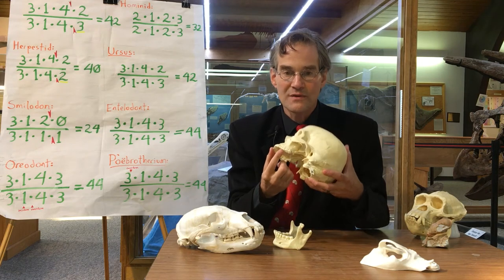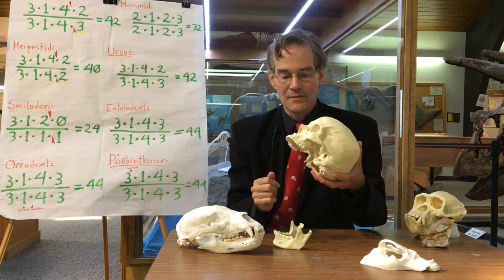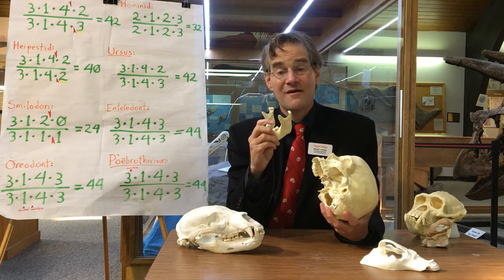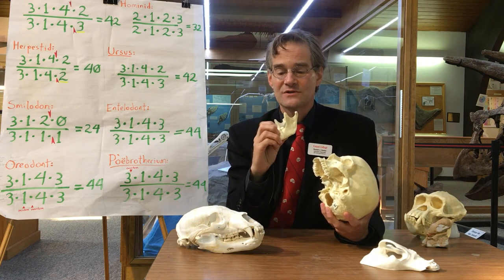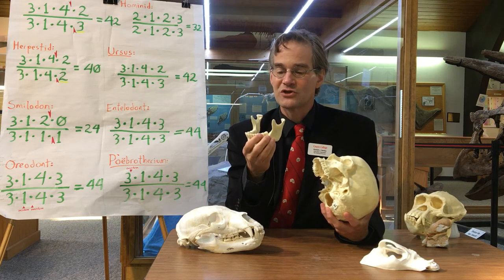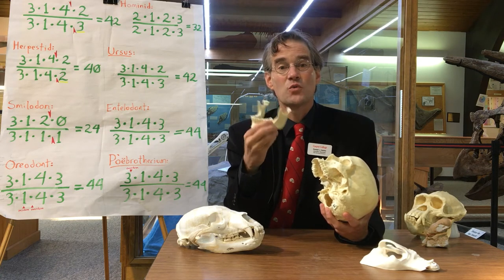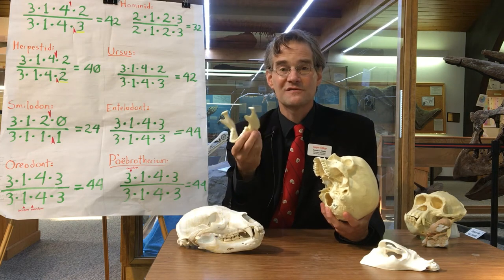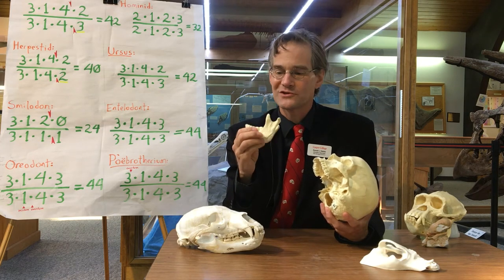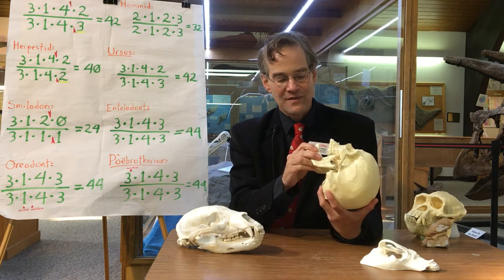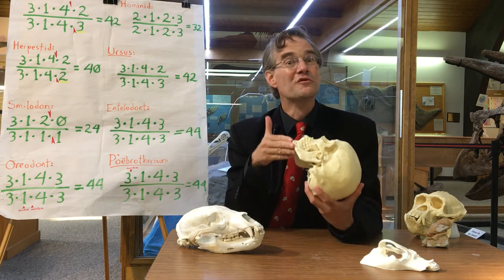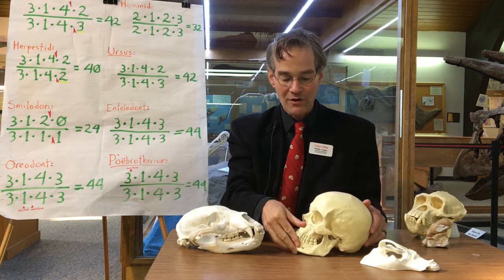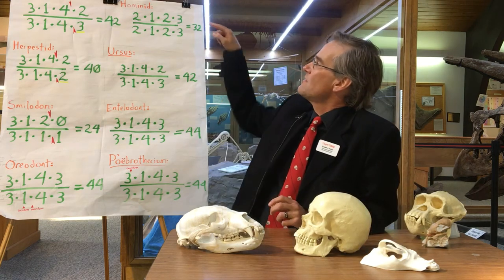If you're very young you might not have that last set of molars just yet — those don't come in until you've reached maturity. For this reason they're called the wisdom teeth, the idea being that they don't appear until you've achieved some wisdom — more of a hope than a certainty. You may not have them yet, or if you've had them removed by your dentist as I have, you may be missing them. But if you've got all your teeth including the wisdom teeth, the total number of teeth in your head is 32.